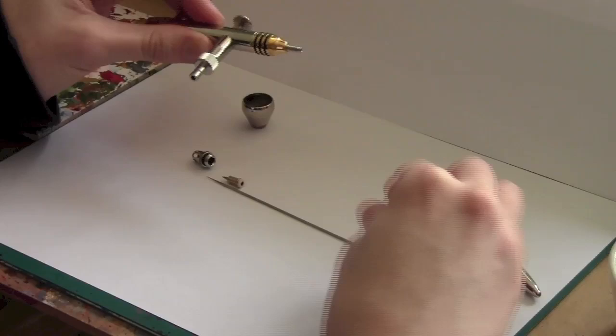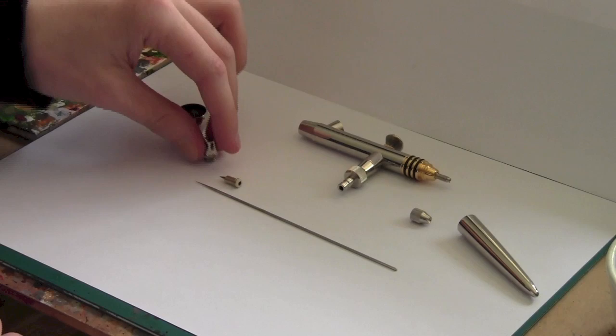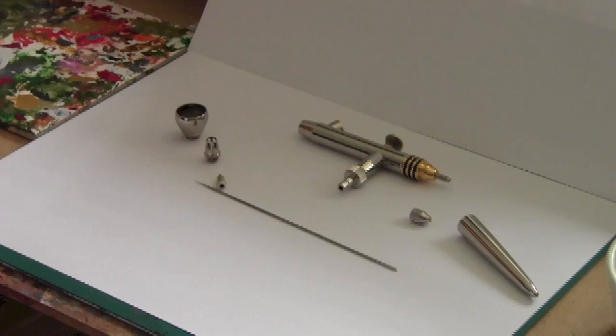And you can go ahead and use, some people use Windex, you can use alcohol or you can just use water. And you should really thoroughly clean these pieces out. Especially the needle and especially the nozzle here. And once this is all clean it should fit straight back together and it will be ready for painting again.